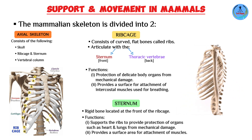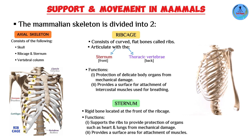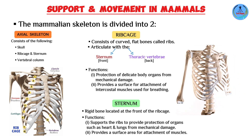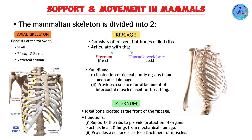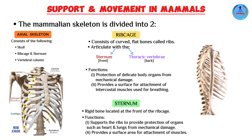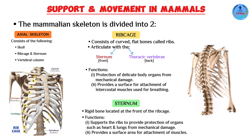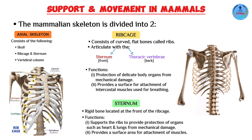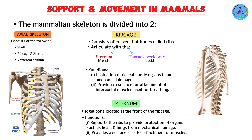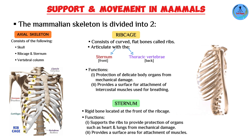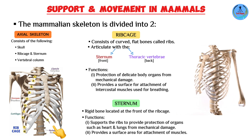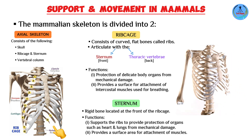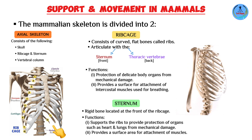Two important points about the ribs: first, at the points where they articulate with the sternum and thoracic vertebrae, they have cartilage. Second, all ribs articulate with the sternum at the front except for the last two ribs — these are not attached to the sternum and are referred to as floating ribs. The floating ribs provide a surface area for attachment of the back muscles.